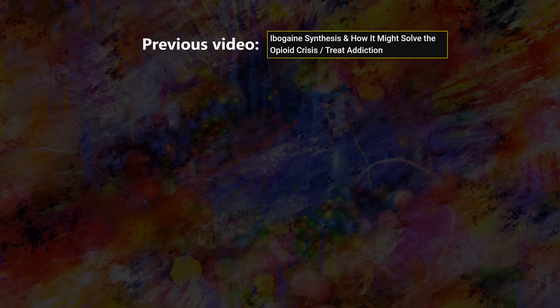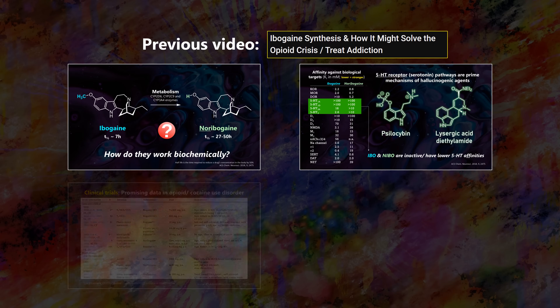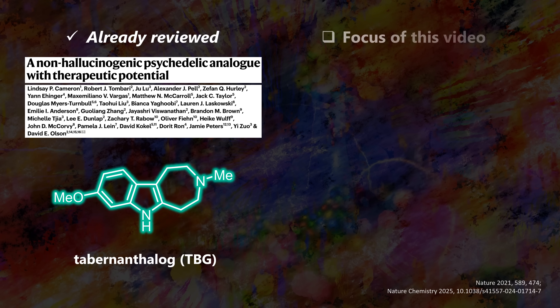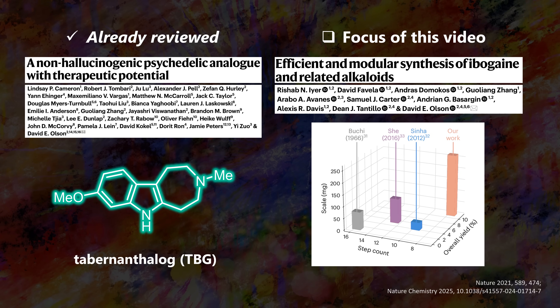In a previous video, we learned how Ibogaine acts in the body, what benefits investigators are starting to see in the clinic, and how Ibogaine is made in the professional lab. We also covered how next-generation molecules like the non-hallucinogenic tabernatolog might address Ibogaine's safety shortcomings. Just recently, Olson and co-workers disclosed another interesting analog and the most efficient synthesis of Ibogaine to date — though you might have a new definition of efficient at the end of this video.